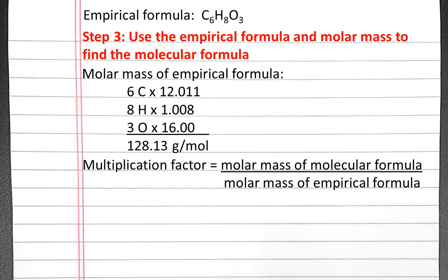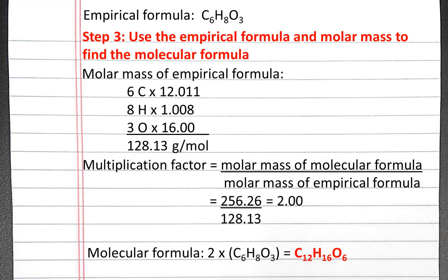I need to find the multiplication factor to convert my empirical formula into my molecular formula. To find that multiplication factor, I divide the molar mass of the molecular formula by the molar mass of the empirical formula. The molar mass of the molecular formula given in the problem is 256.26 grams per mole, and the molar mass of the empirical formula that I've calculated is 128.13 grams per mole. So my multiplication factor is 2. To find my molecular formula, I take the empirical formula times 2, and I get C12H16O6.